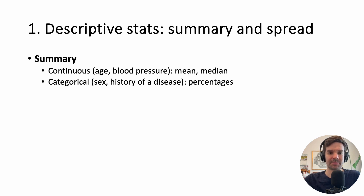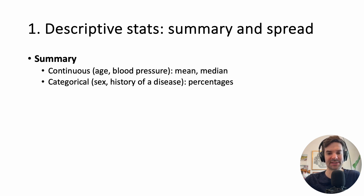Primarily it's a summary and the spread. For summary, if it's a continuous variable like age or blood pressure, you summarize by calculating a mean or median. If it's a categorical variable like sex or history of disease, that gets summarized by percentages — percentage of people who are men, percentage with diabetes, etc.